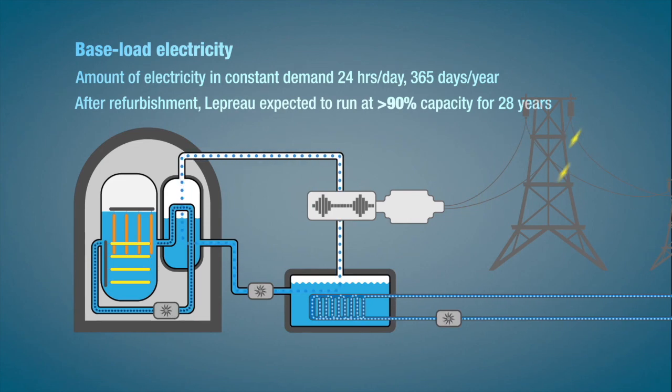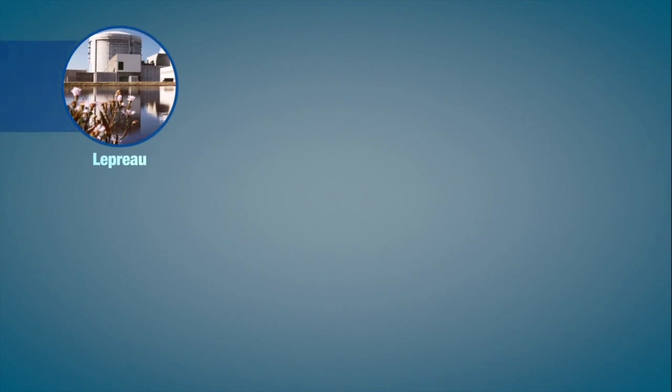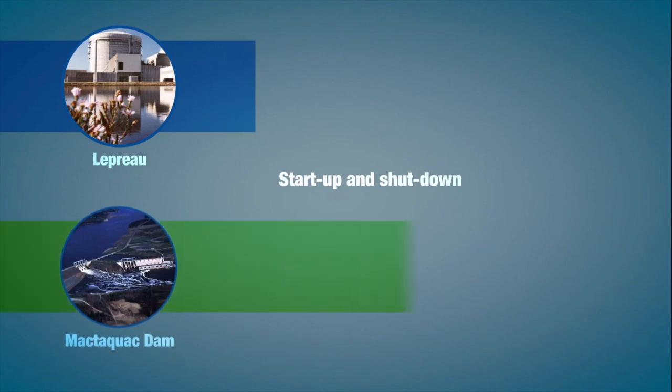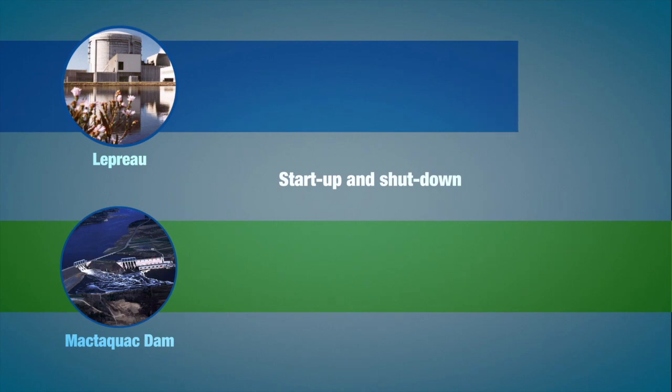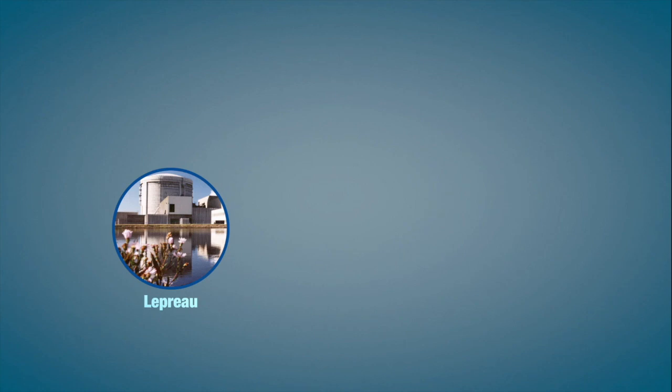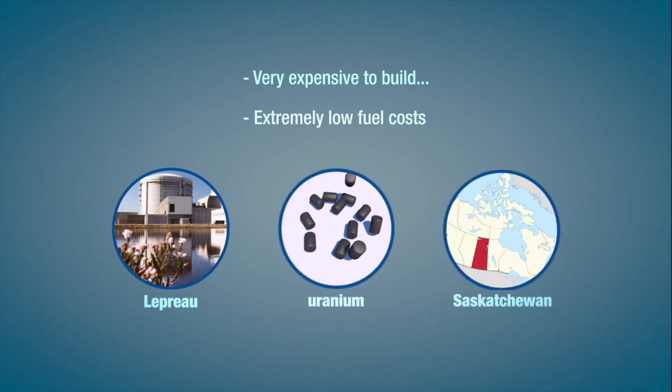Nuclear power plants are ideal for this steady baseload demand for two reasons. One, they take a very long time to start up and shut down. The Mactaquac dam can increase its output from zero to full power in a matter of minutes. It would take days for Point Lepreau to achieve the same thing. It is not easy for nuclear power generation to respond quickly to large changes in demand. Secondly, nuclear power plants, while very expensive to build, have extremely low fuel costs. The uranium comes from Saskatchewan, and as we've seen, a little goes a long way.